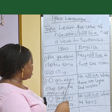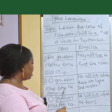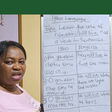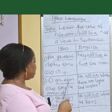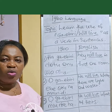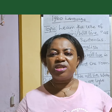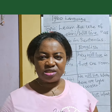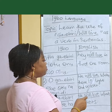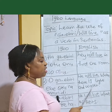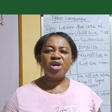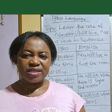Number two says: 'Ha ga ebiri no tu ono olo aham.' Ha ga ebiri no tu ono olo aham. Meaning: he will live where there is light and water.